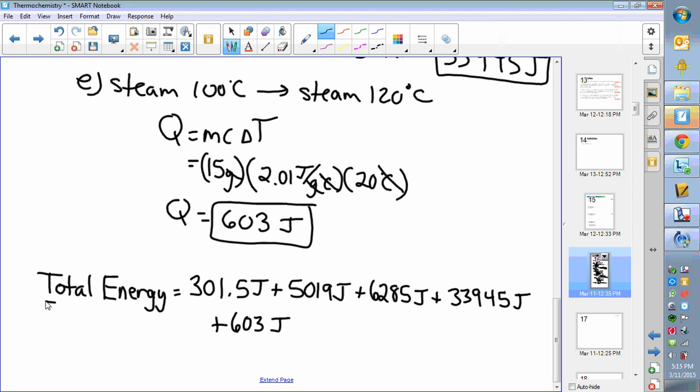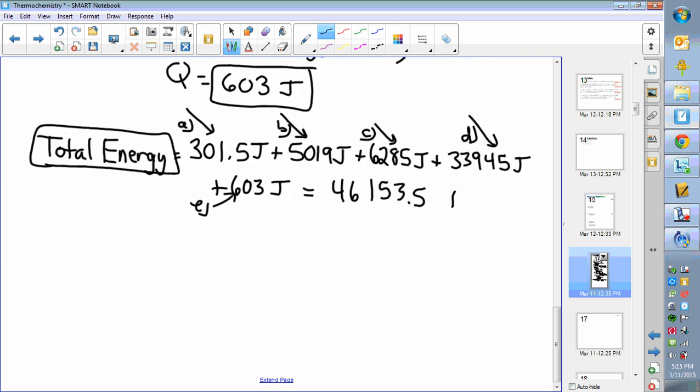So we write all those down in one spot. The total energy is the energy for heating ice—301.5, the energy for melting ice—5019, the energy for heating the water—6285, the energy for boiling the water—33,945, and lastly the energy for heating the steam—603. All of that adds up to 46,153.5, way too many significant digits to consider. So that many joules—if you divided that by a thousand you get 46.1 kilojoules. That is the total energy required.